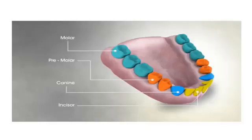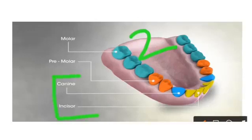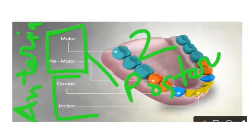The different types of teeth in the oral cavity are divided into two groups for easy description. The incisors and canine teeth are together called the anterior teeth, and the molars and premolar teeth are together called the posterior teeth.